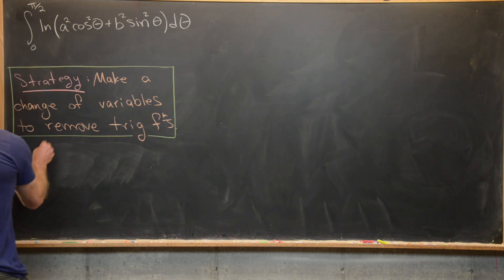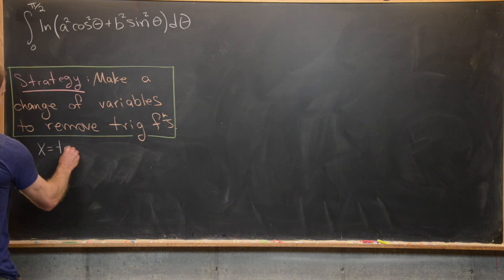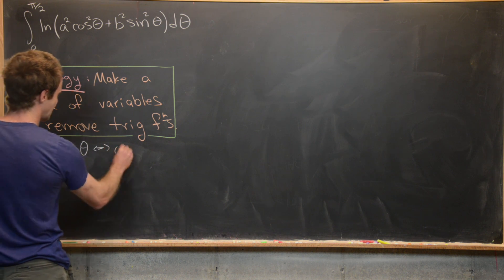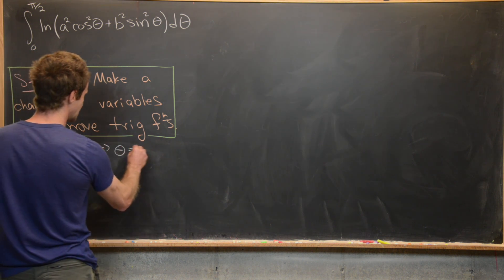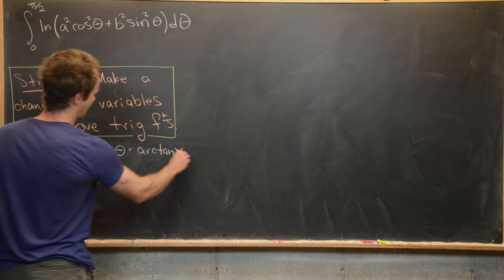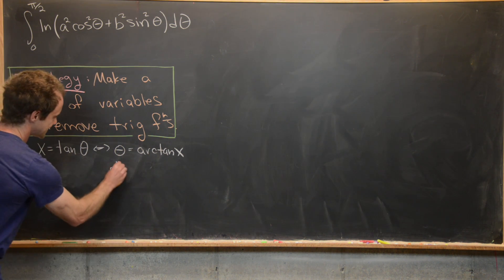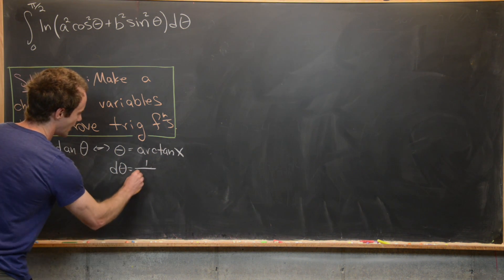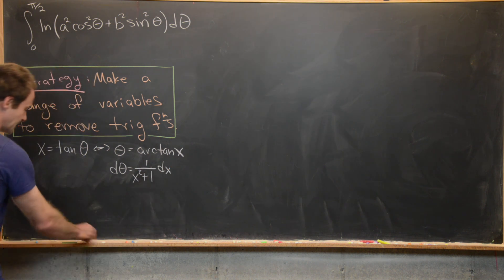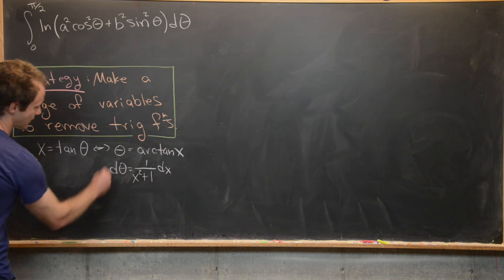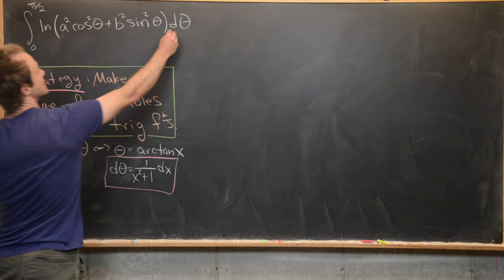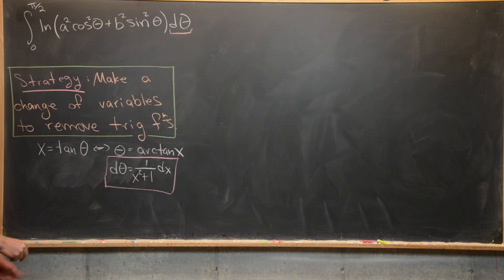So we're going to let x equal tangent theta, which is equivalent to saying theta equals the arctan of x. That tells us d theta is equal to one over x squared plus one, dx. And that's an important thing to calculate, because it shows up in the integral.